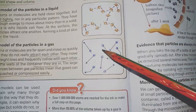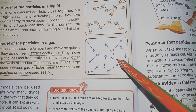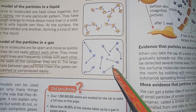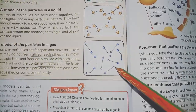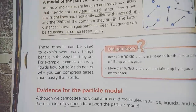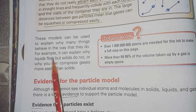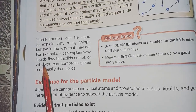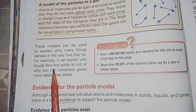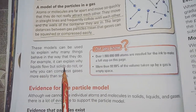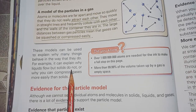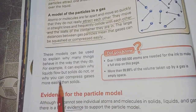Gas molecules move in straight lines and frequently collide with each other. When you spray a fragrance in one corner of a room, the gas molecules spread quickly by mixing with the air to the other corners of the room. These models can explain why liquids flow but solids do not — because liquid molecules are further apart. Solids cannot flow because they have a force of attraction between molecules. And you can compress gases because there is a lot of space between their molecules.